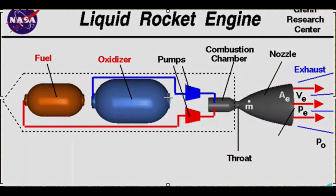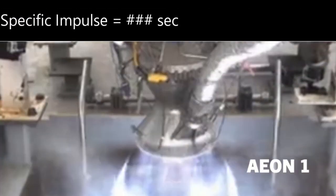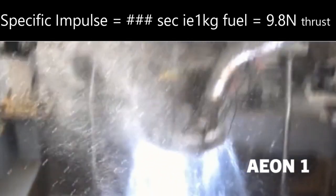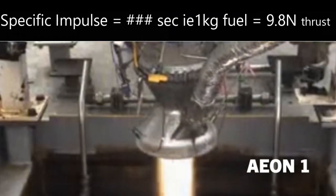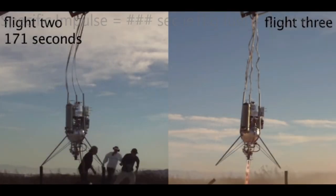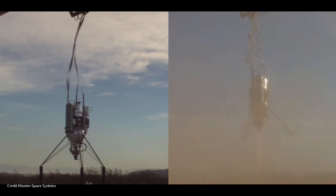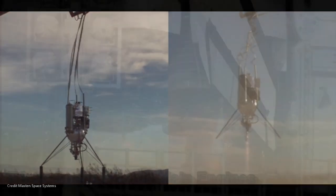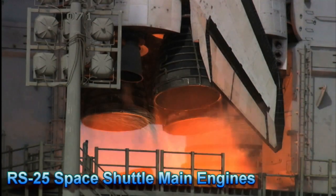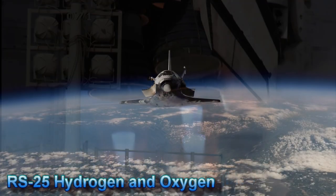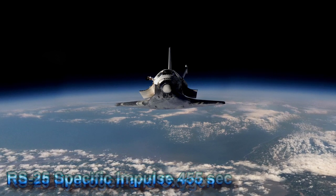Rocket engine efficiency is measured in specific impulse seconds. How many seconds can a unit mass of fuel balance the force exerted by the Earth's gravity on a unit mass of payload? For example, how long could one kilogram of fuel levitate one kilogram of mass against Earth's gravity? The most efficient rocket engines ever built were the RS-25 space shuttle main engines, burning hydrogen and built by Aerojet Rocketdyne with a specific impulse in vacuum of 455 seconds.